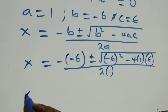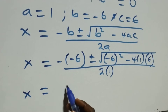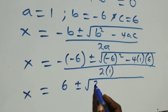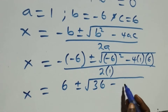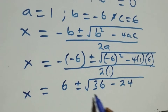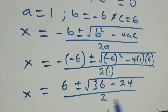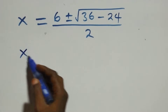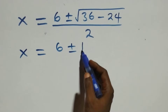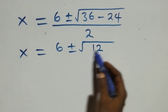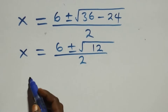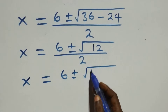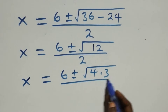Simplifying, x equals 6 plus or minus square root of (36 minus 24), over 2. That gives x equals 6 plus or minus square root of 12, over 2. We can also write 12 as 4 times 3, so x equals 6 plus or minus square root of (4 times 3), over 2.